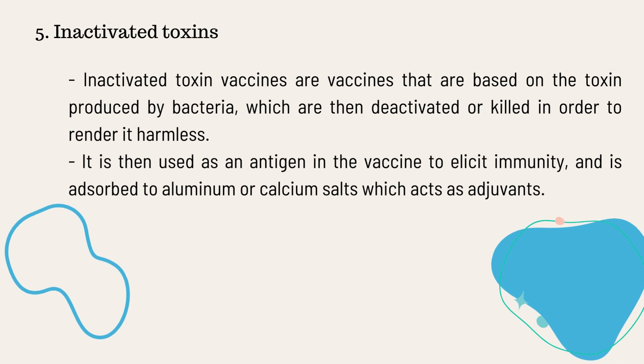The fifth type of vaccine is the inactivated toxins. Inactivated toxin vaccines are based on the toxin produced by bacteria, which are then deactivated or killed in order to render it harmless. Bacteria produce toxins which usually enter through the bloodstream, and this is what causes diseases in organisms. Inactivated toxins use the toxins produced by the bacteria as an antigen in the vaccine to elicit immunity, and it is usually accompanied by an adjuvant of aluminum or calcium salts.